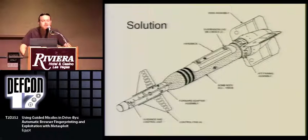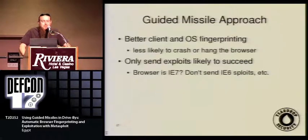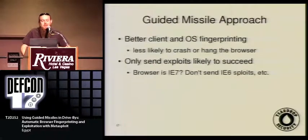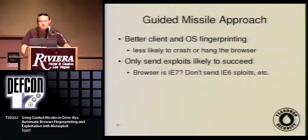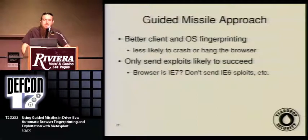The solution is a laser-guided missile approach. The first thing you need is to know what to point the laser at — you need to know what the client is and what OS it's running. We use JavaScript fingerprinting to do all of that. Once we figure out what the target is, we're much less likely to crash or hang it, or trigger that stupid dialogue saying this script has been running too long. So we only send exploits that are likely to succeed — it doesn't make sense to send Firefox exploits to IE, or IE6 exploits to IE7.